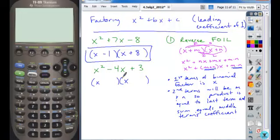x - 1 and x - 3. So again, your first terms are x's. Your second terms are going to be the factors of positive 3 whose sum is negative 4. And we can FOIL this to confirm. So we have x² - 3x - 1x, and that's negative 4x. And then -1 times -3 gives you +3. And so we confirm that we have the right solution.